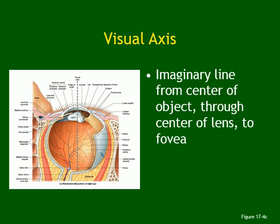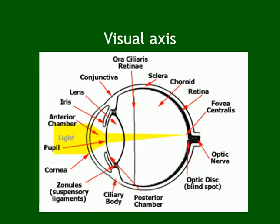The visual axis starts from the object, enters through the center of the cornea, goes through the anterior chamber, through the iris opening (the pupil), through the posterior chamber, through the lens, and all the way to the fovea centralis. The fovea centralis, in the middle of the macula densa, is the end of the visual axis — the most sharp and accurate point of focus.